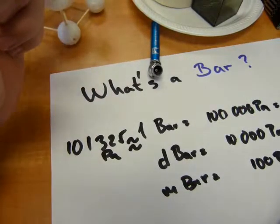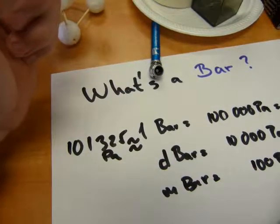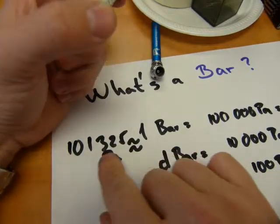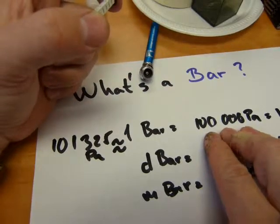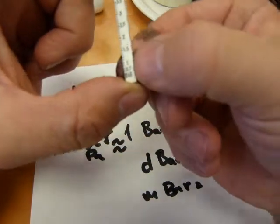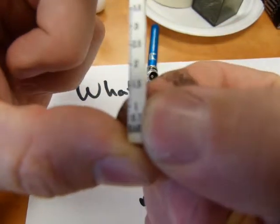That's not the dunes and waves on the seashore, that means approximately equal to. So 101,325 is kind of close to 100,000. So if you want to visualize one bar, it's about the atmospheric pressure of air at sea level.